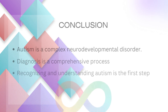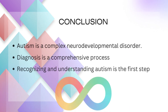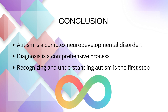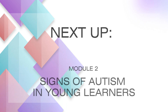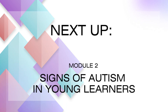In conclusion, autism is a complex neurodevelopmental disorder that affects individuals differently, creating a unique spectrum of abilities and challenges. Diagnosis is a comprehensive process involving professionals from various fields. Recognizing and understanding autism is the first step in creating a supportive and inclusive classroom environment. Thank you for joining us in this module. Stay tuned for our next module, where we will discuss the signs and behaviors in young learners.